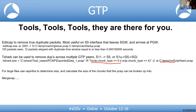Use editcap to remove true duplicates with the appropriate command. If you have a 2 GB file you truly need to examine in full, use capinfos to determine the size, calculate the number of chunks needed, then use Tshark or mergecap to divide it into manageable pieces.